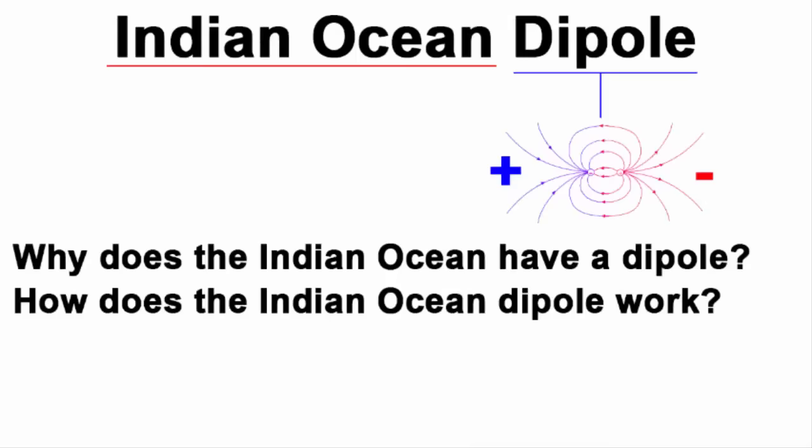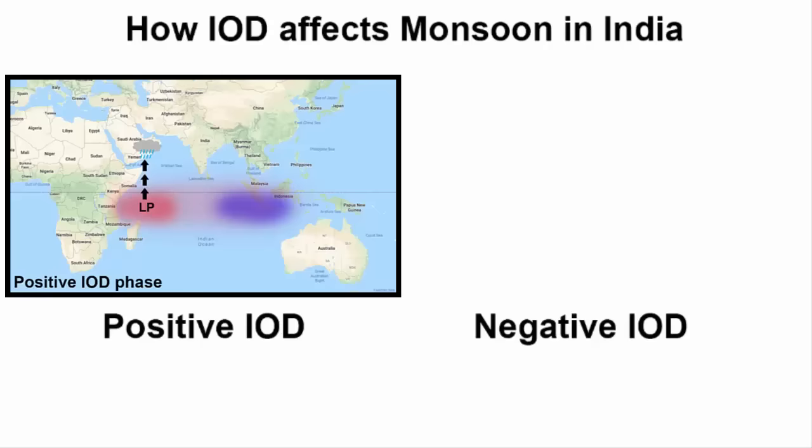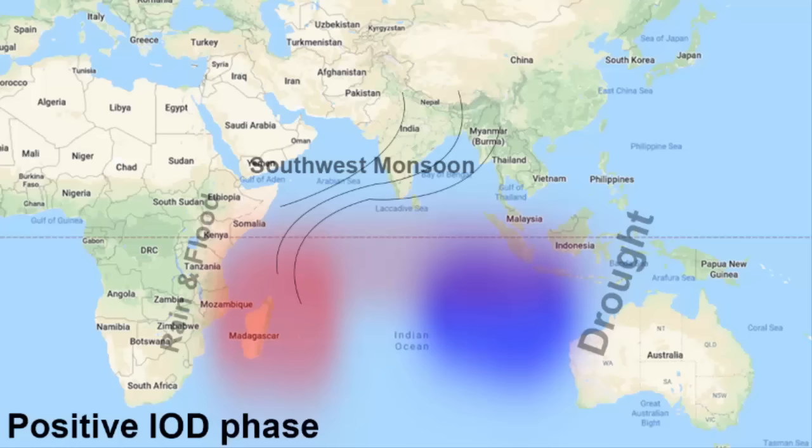Now, how does the Indian Ocean Dipole affect the monsoon in India? During a positive IOD, the eastern part of the Indian Ocean becomes abnormally cool and the western part remains unusually warm. The reverse occurs during a negative IOD. A positive IOD is said to be beneficial for the Indian monsoon because it pushes the rain towards India. And whenever there is a drought condition in India, a negative IOD has been found.